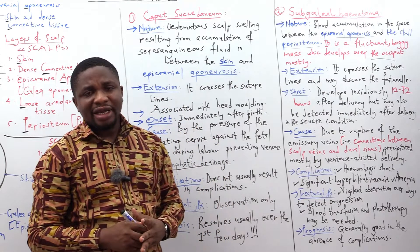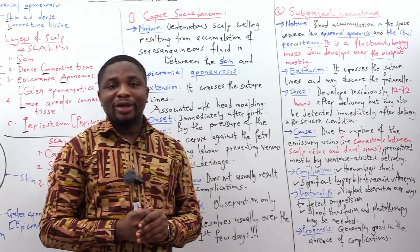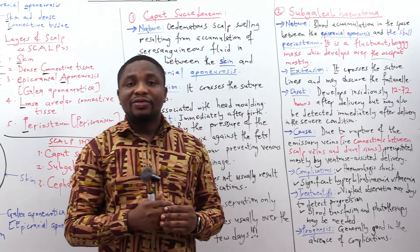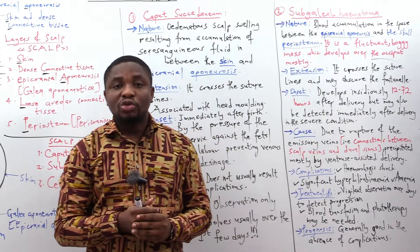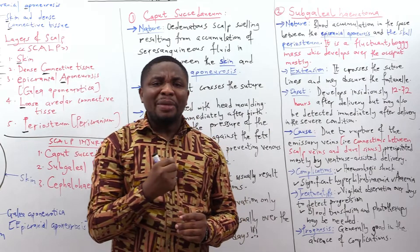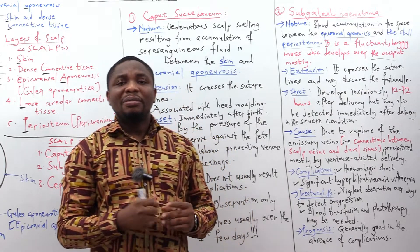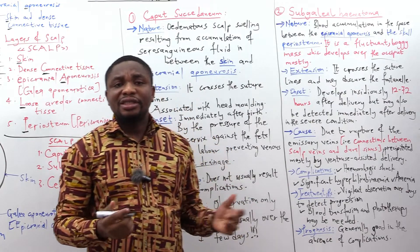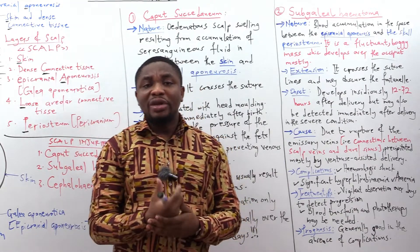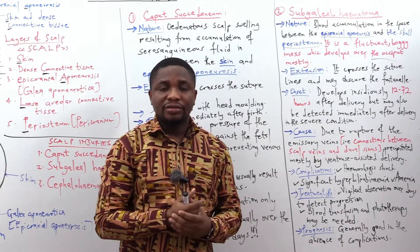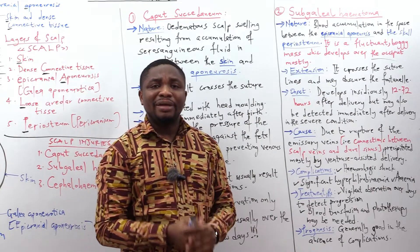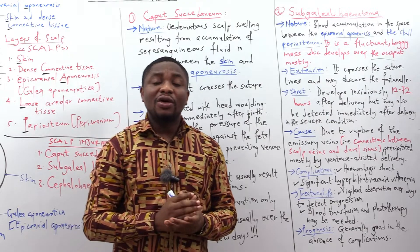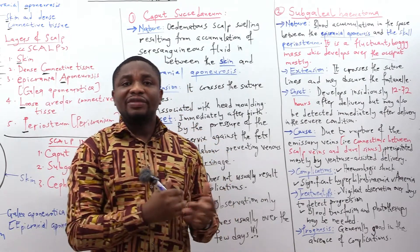The cause of subgaleal hematoma is rupture of the emissary veins, which are connections between the scalp veins and the dural sinus. Rupture of these emissary veins is precipitated by vacuum-assisted delivery. Complications include hemorrhagic shock, significant hyperbilirubinemia — since the red blood cells will be hemolyzing, releasing hemoglobin as a substrate for bilirubin synthesis, raising bilirubin levels — so the child must be observed for jaundice. Another complication is anemia.